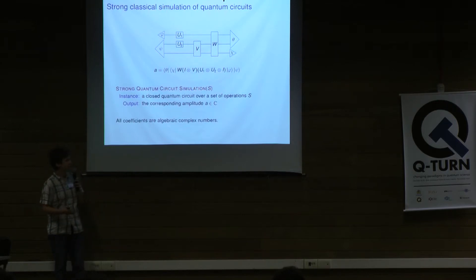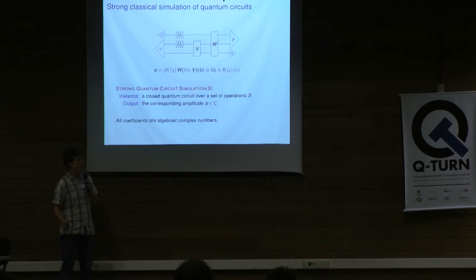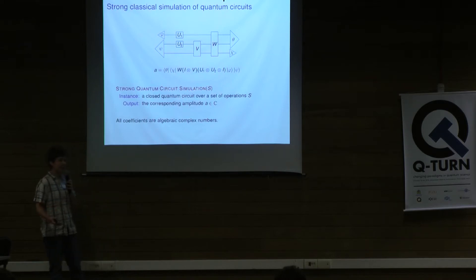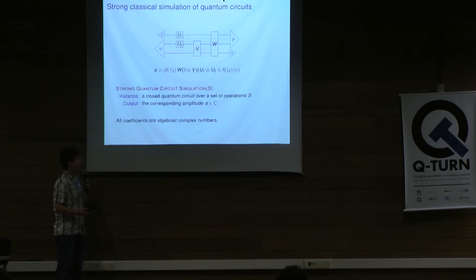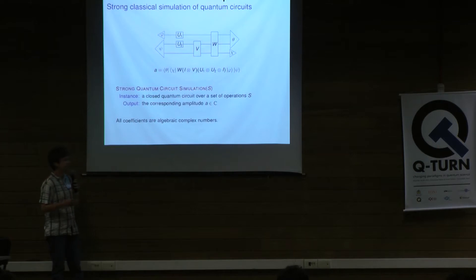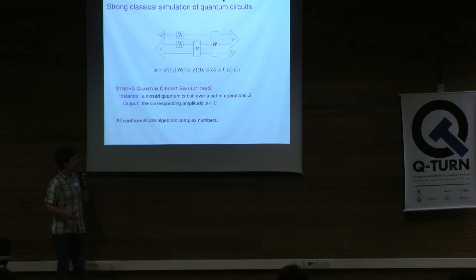There is a snag: if we allow gates and operations parameterized by arbitrary complex numbers, we might not be able to compute this amplitude on a classical computer. That's why throughout this talk I'm always going to restrict myself to algebraic complex numbers — exactly those numbers that we can do efficient computation with, without worrying about the number not being computable itself. Even if I forget to mention it, just keep in mind that everything is always algebraic.